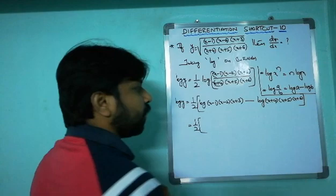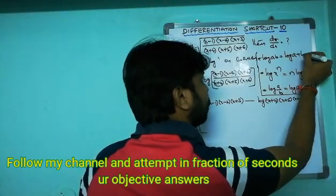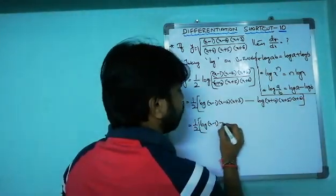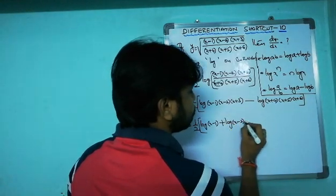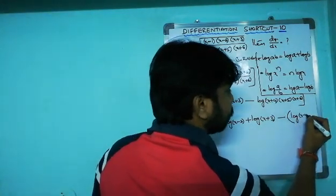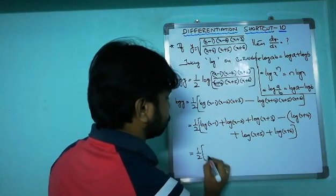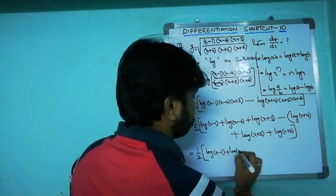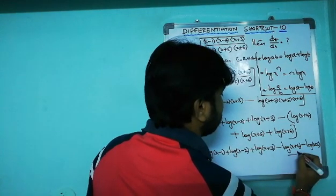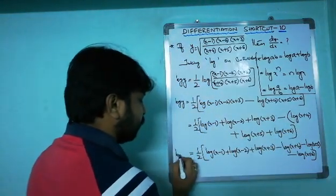Using the property log(abc) = log a + log b + log c, expand both parts. Log y = (1/2) · [log(x−1) + log(x−2) + log(x+3) − log(x+4) − log(x+5) − log(x+6)]. The minus sign distributes to all denominator terms, giving negative signs throughout.